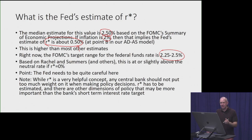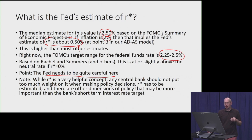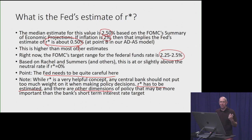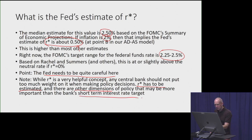The bottom line is that the Fed needs to be very careful — careful about whether policy is running too contractionary or too loose. Even though R-STAR is really important for conceptualizing how monetary policy works, it's not the only ingredient in making monetary policy. R-STAR is estimated, so there are margins of error. There are also other dimensions of policy — for example, communications and the size of the central bank's balance sheet — which matter as much or possibly even more than the short-term interest rate.